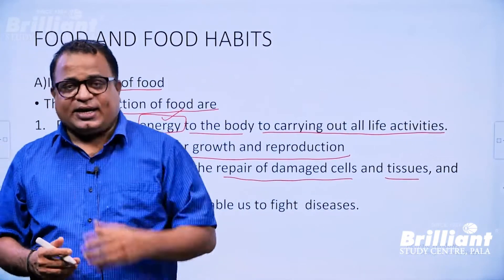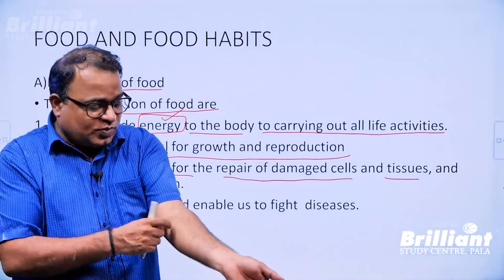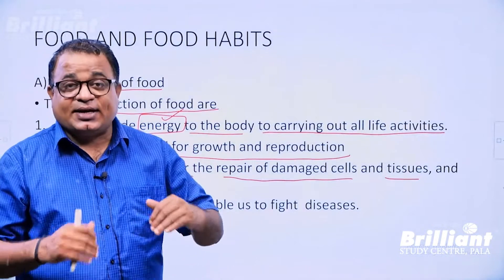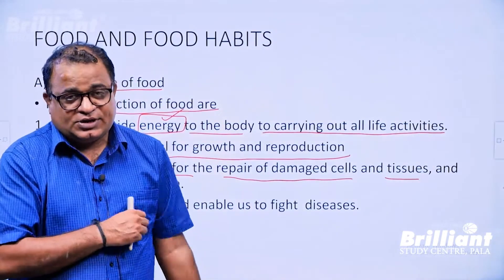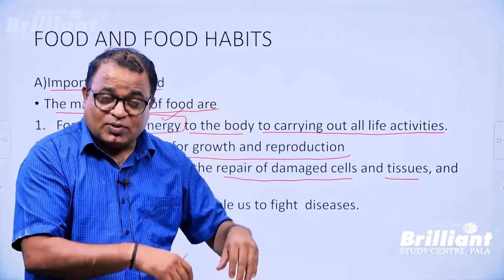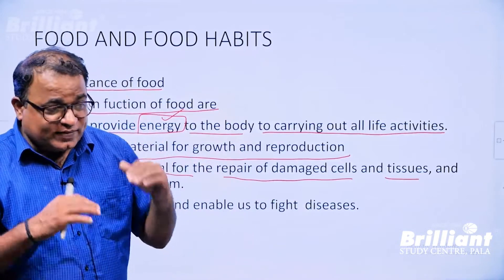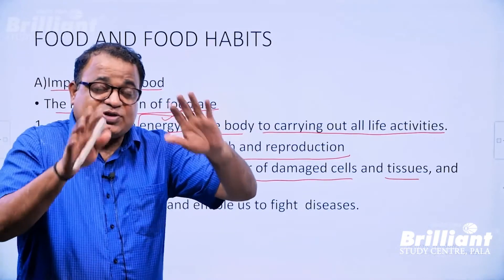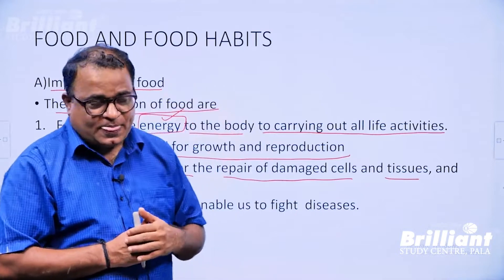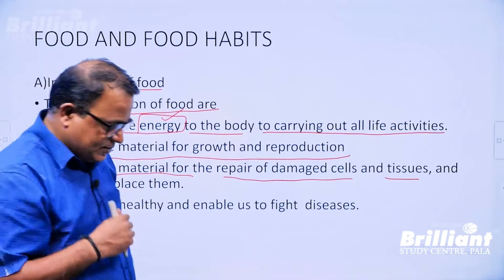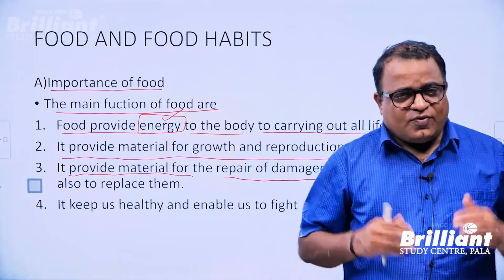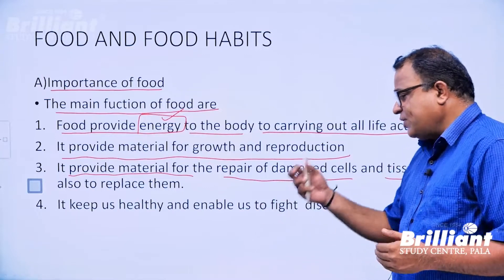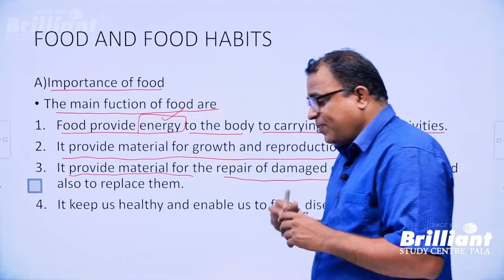Repair — sometimes there is a wound and some cells and tissues are damaged. The body will synthesize those structures which are supposed to be repaired or replaced, using the nutrients which are present in the food. So first, food provides energy. Second, food helps in growth, development and reproduction. It also provides material for the repair of damaged cells and tissues and replaces them.